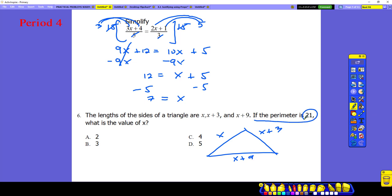It says that the perimeter is 21. So what's the meaning of this? If you're going to sum this side, which is x, with this side, which is x plus 3, and this side, which is x plus 9, the sum should be equal to what? 21. That's your perimeter.